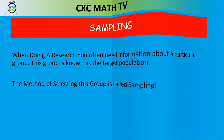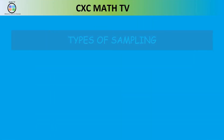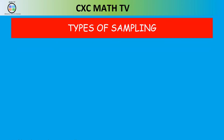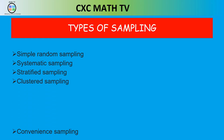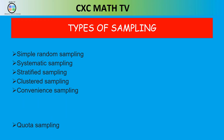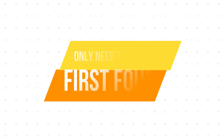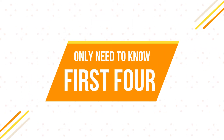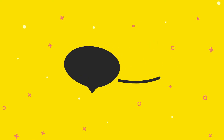There are many types of sampling: simple random sampling, systematic sampling, stratified sampling, clustered sampling, convenience sampling, quota sampling, judgment sampling, and snowball sampling. However, we only need to remember four of them — simple random, systematic, stratified, and cluster. The others are not on the ADMAT syllabus.